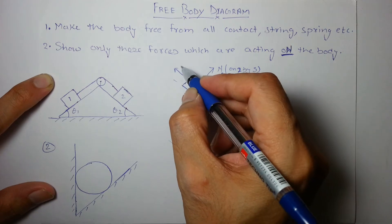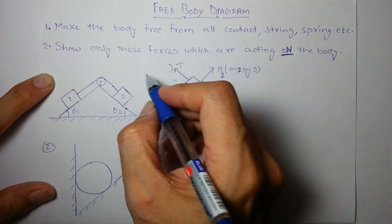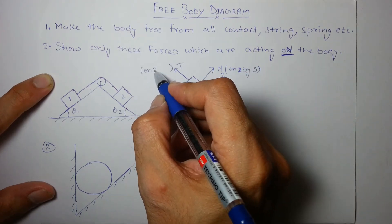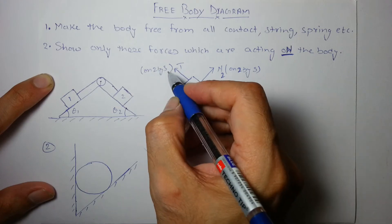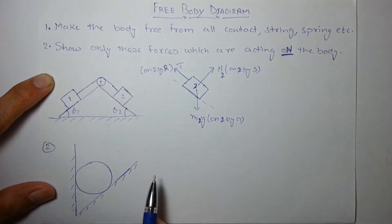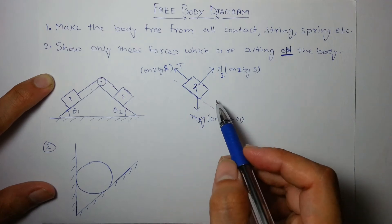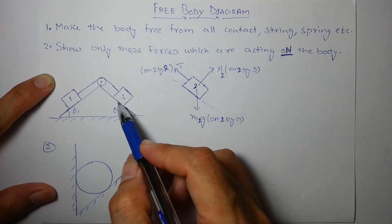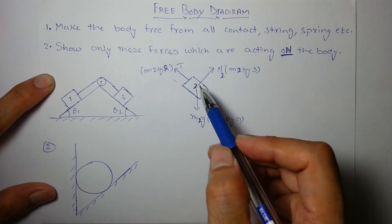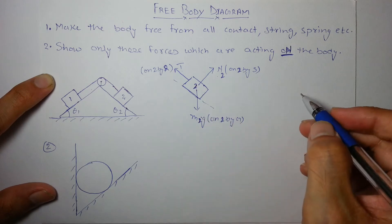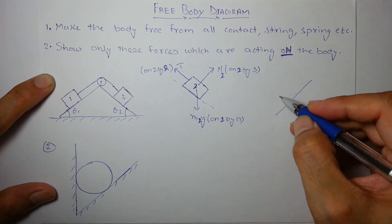Okay, n2, t, and m2g. What about free body diagram of block 1? n1, again gravity will act vertically down, m1g on one by earth or ground.